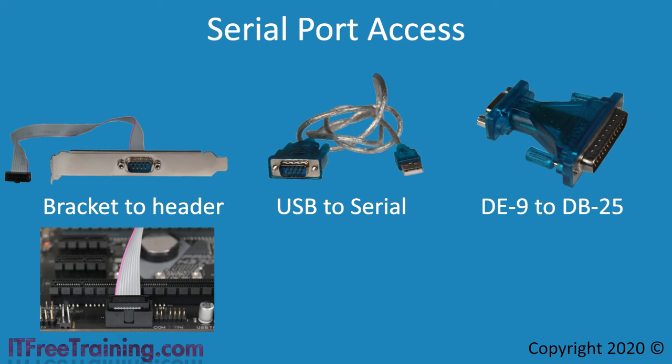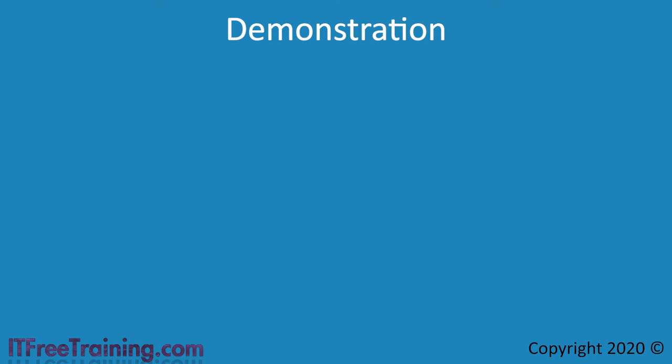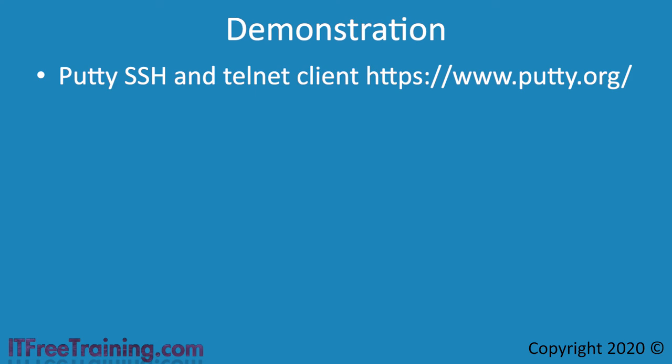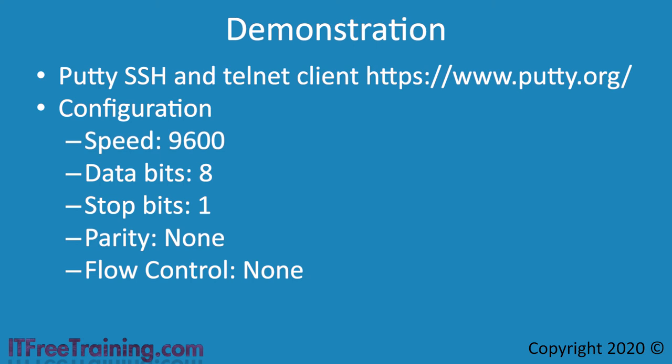Now let's have a look at how you would access a device using the serial port. There are many different software programs available; in this demonstration I will use free software called Putty. Putty can be used for secure shell, telnet, and serial connections — it has a lot of features and is free, making it good software for the administrator to have. Serial connections are not automatically configured like modern computer components, and in most cases a serial connection is a last resort. If you have another way of accessing the device, use that. Consult the device manual to find out what the settings should be if you are having trouble.